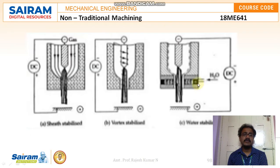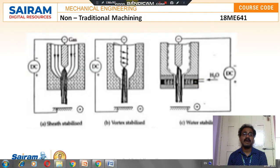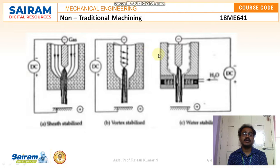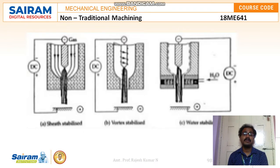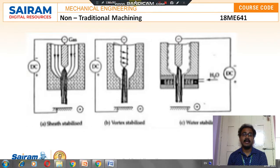In the next video we will discuss more about the process parameters, advantages, applications, and drawbacks. Among all the non-traditional machining processes available, plasma arc machining is one of the easiest and does not create many problems; it is also very reasonable in terms of investment. We will discuss all this information in detail when covering the advantages and disadvantages. Thank you.